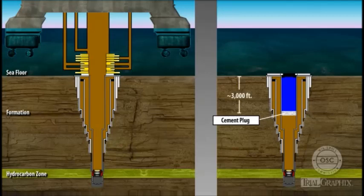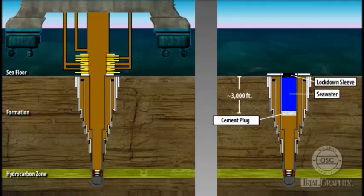Before doing so, the rig crew would replace the 3,000 feet of drilling mud in the well above the cement plug with much lighter seawater. The crew would also set a lockdown sleeve to lock the production casing into the wellhead.